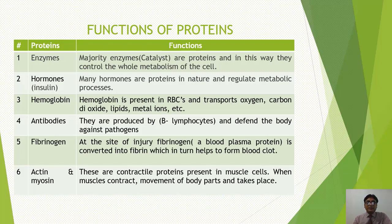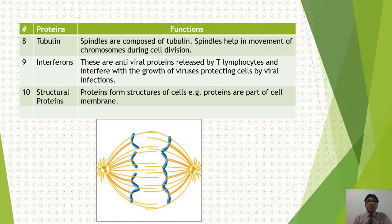Fibrinogen को liver synthesize करता है। इसी तरह actin और myosin contractile proteins हैं जो हमारे muscle cells में present होती हैं। इन्हीं proteins की वजह से हमारे muscle cells contract करते हैं, जिसकी वजह से body के different parts move करते हैं। Tubulin protein spindle fibers बनाने में help करती है। Spindle fibers cell division में बनते हैं, chromosomes इनसे attach होती हैं, और जब spindle fibers opposite poles की तरफ contract करते हैं तो sister chromatids opposite side की तरफ move करती हैं।